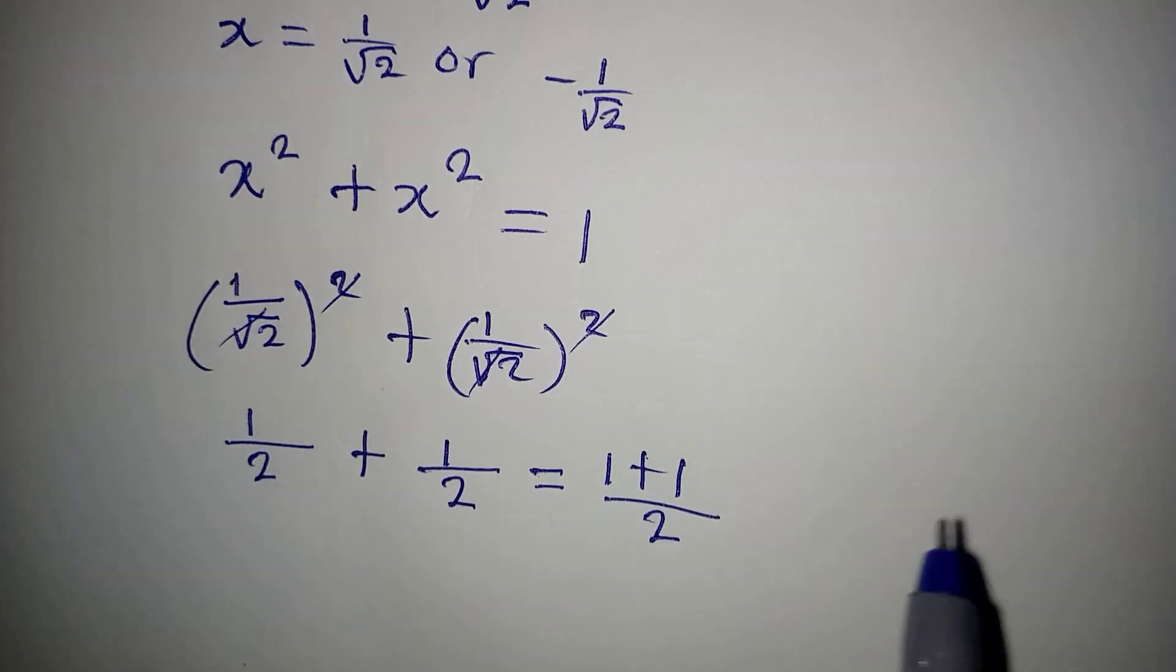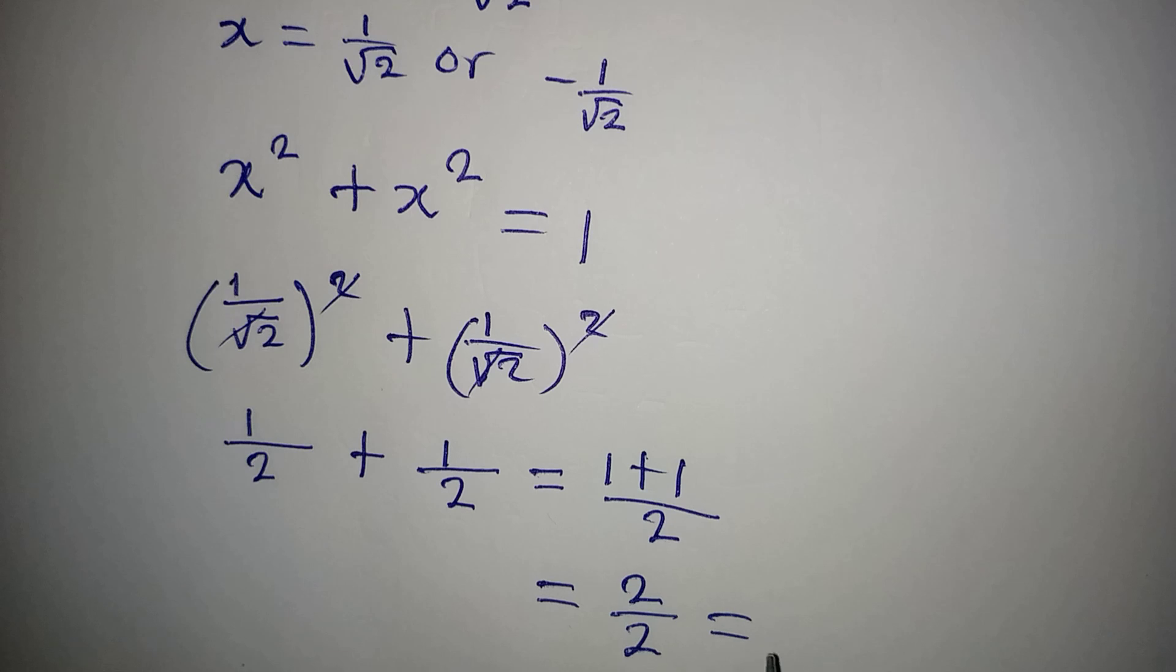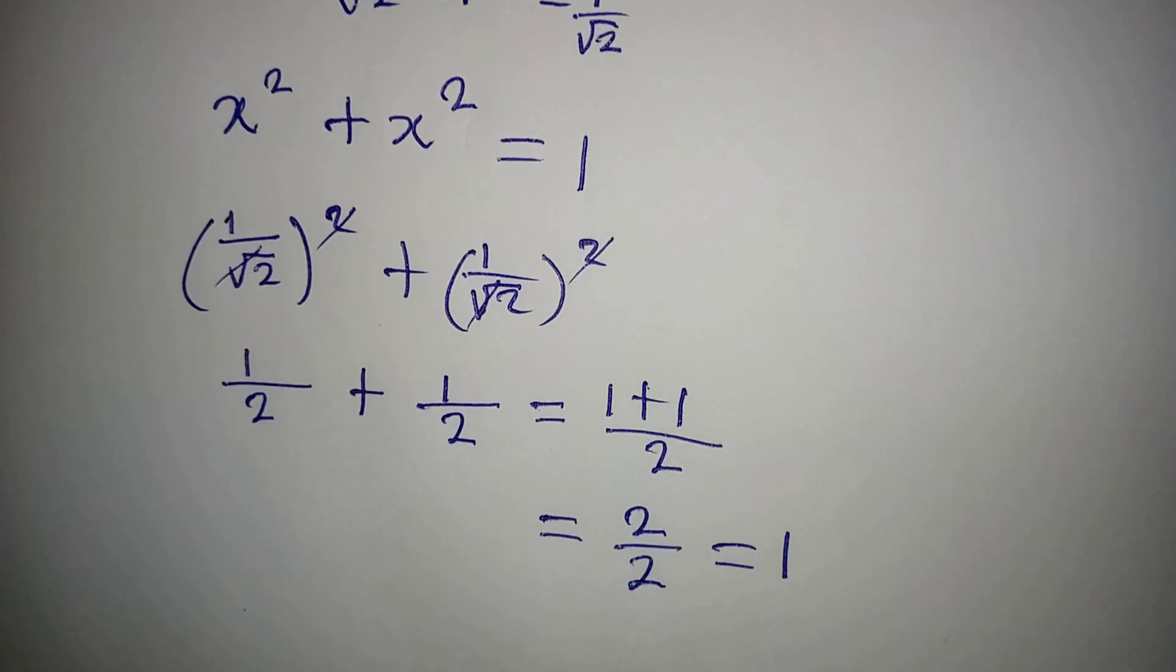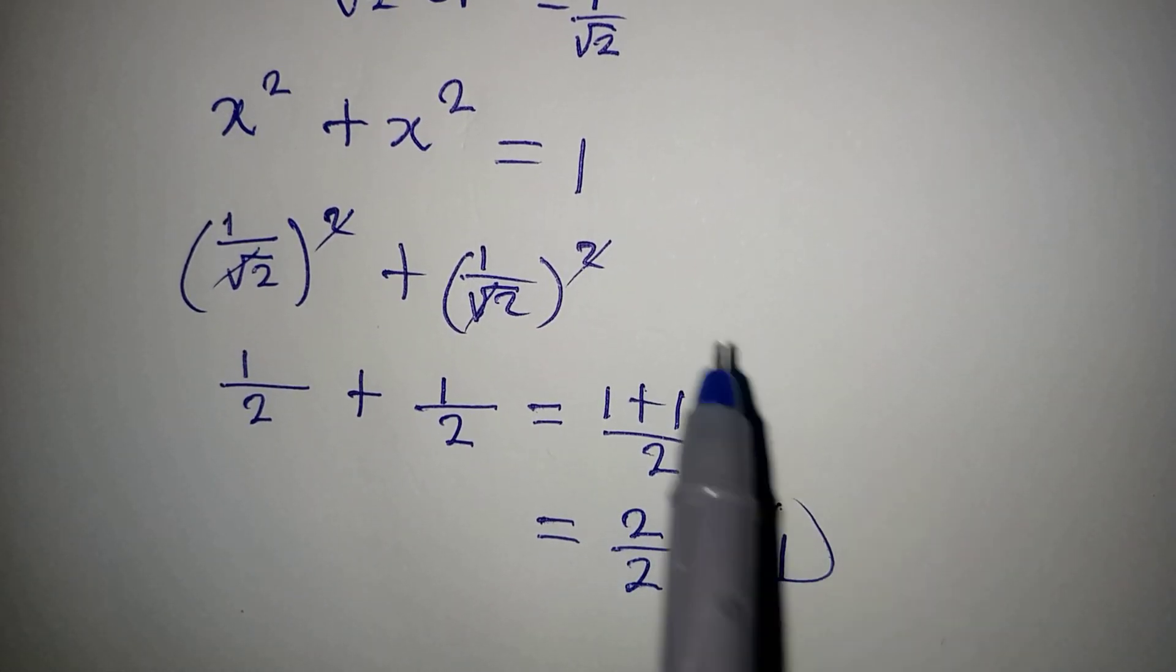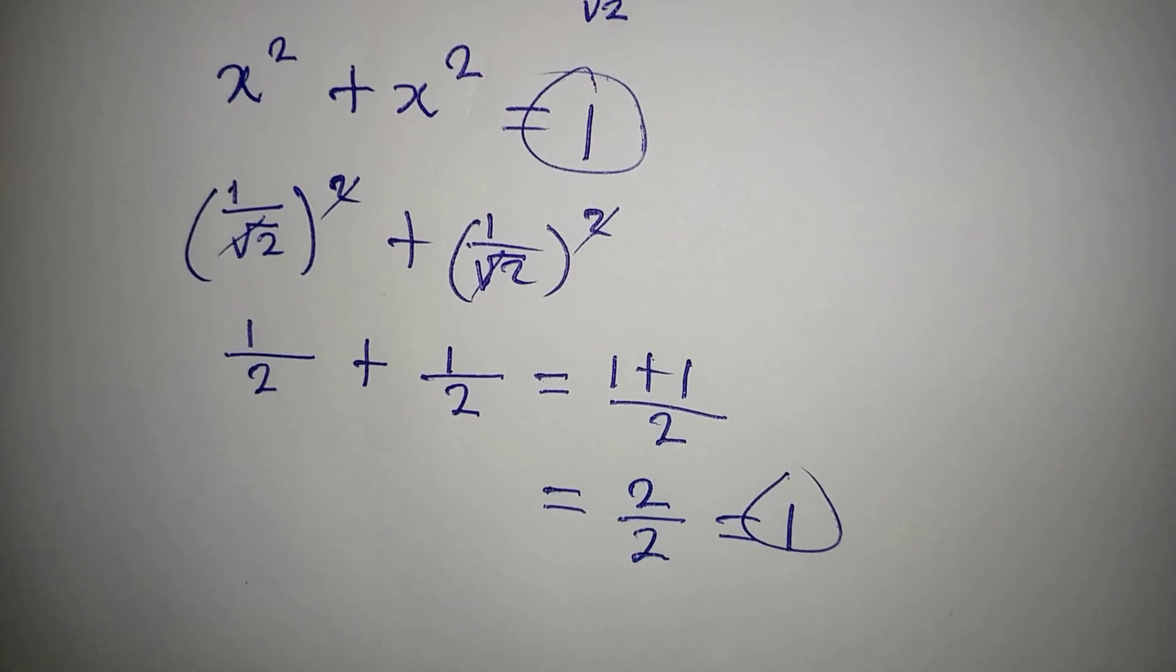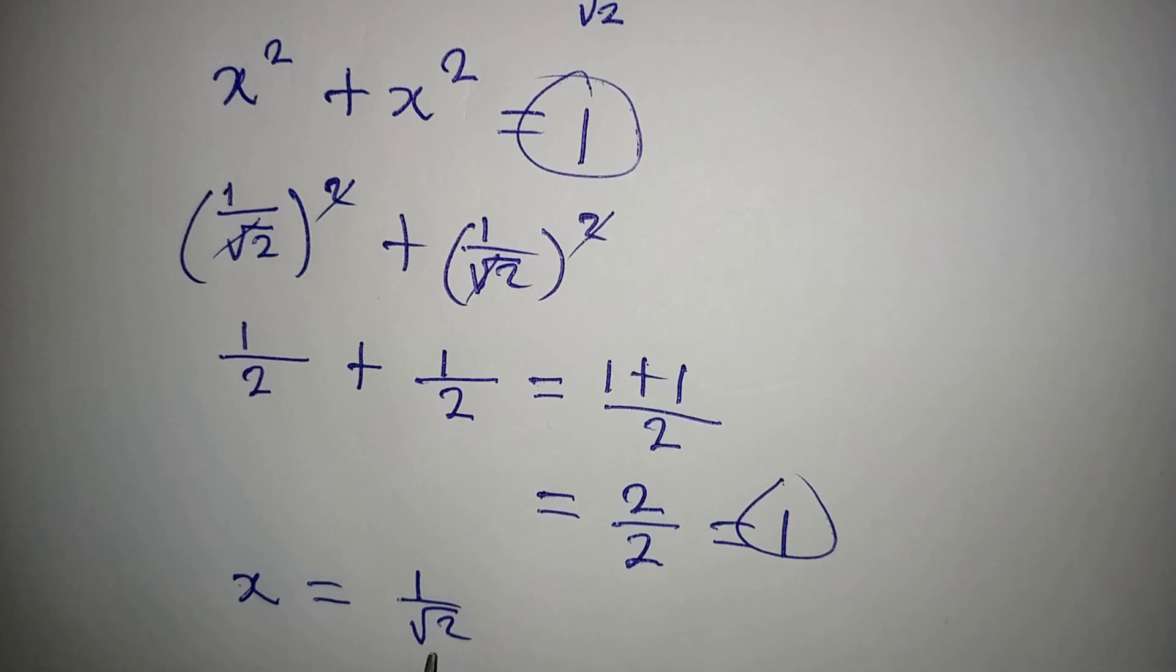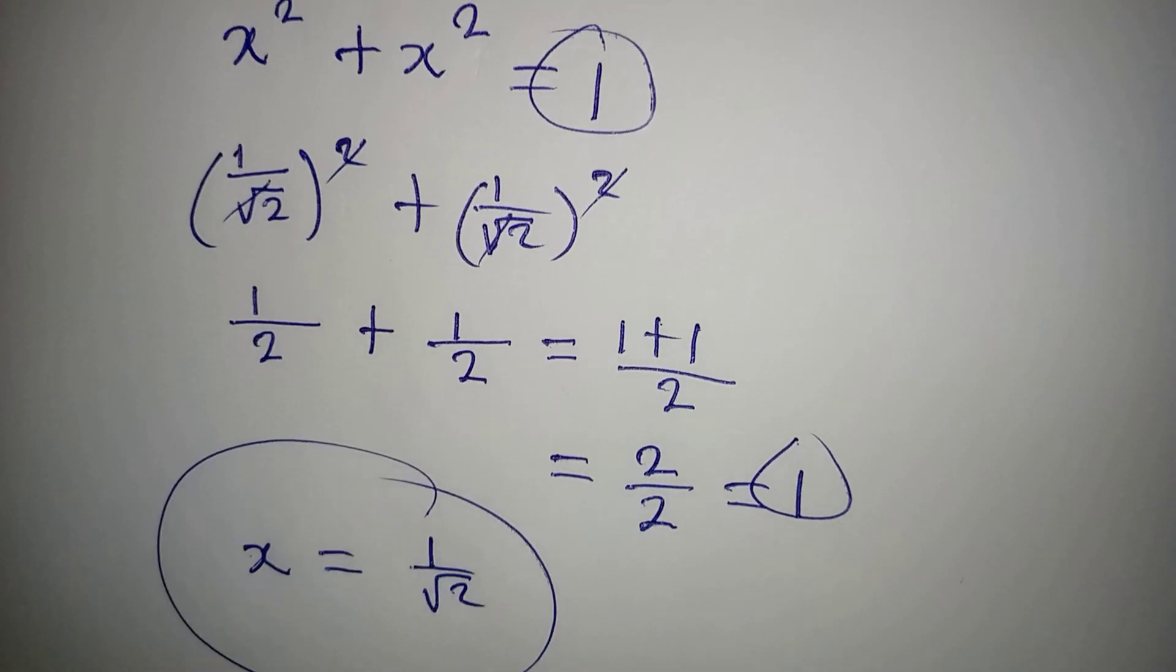And then this is going to give 2 over 2 which is 1. And remember that it is 1 we had on the right hand side, so this is to confirm that x is equal to 1 over root 2. Thank you for watching.